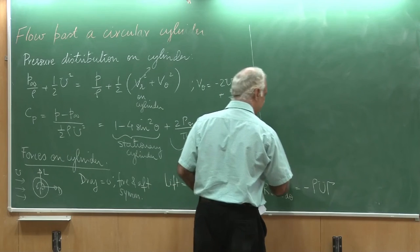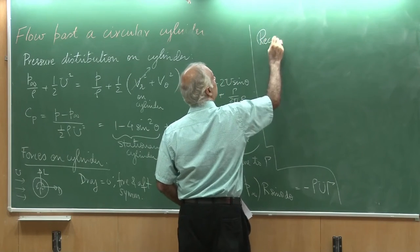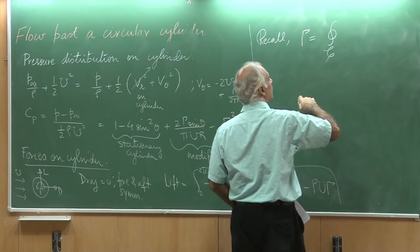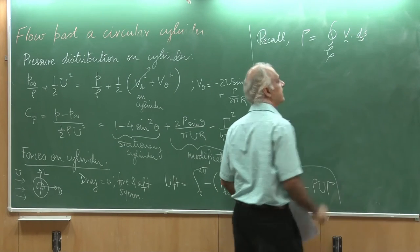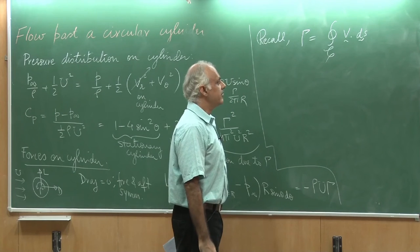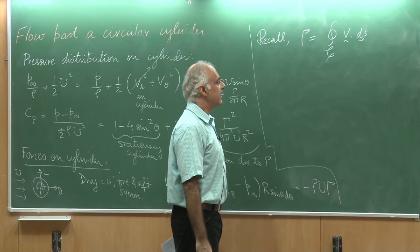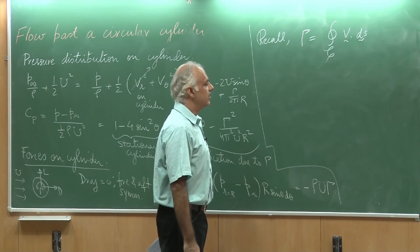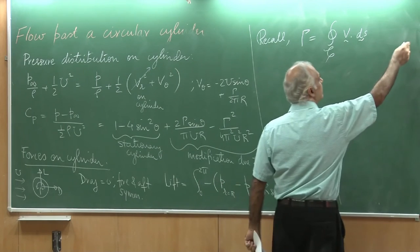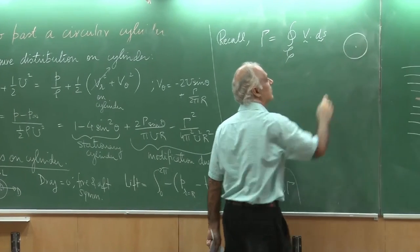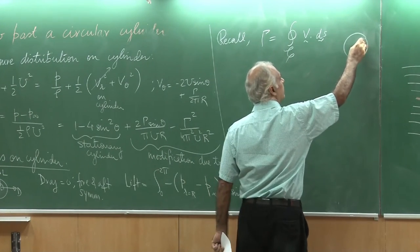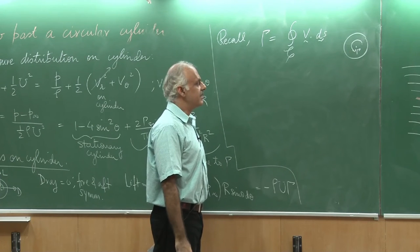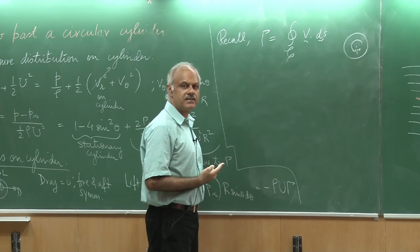Let me recall for you, what the circulation is. Gamma was given as by definition an integral over a curve V·ds. Where the curve C is actually the integral has to be taken in a counter clockwise direction.